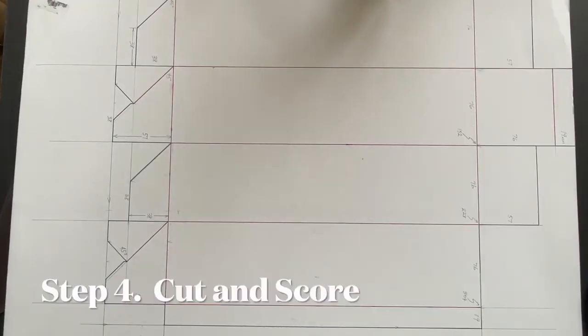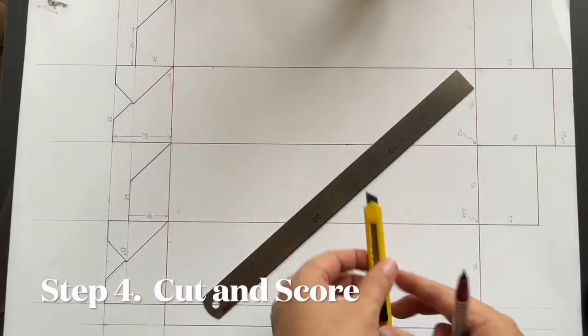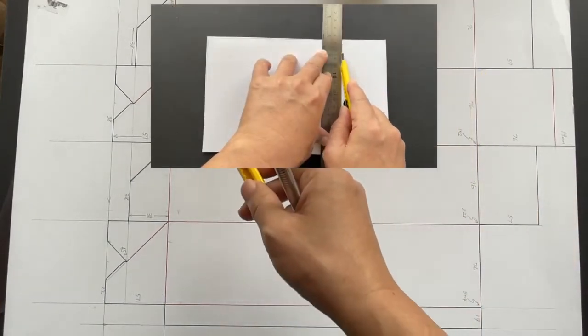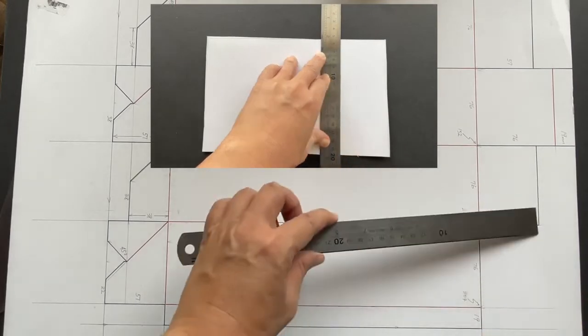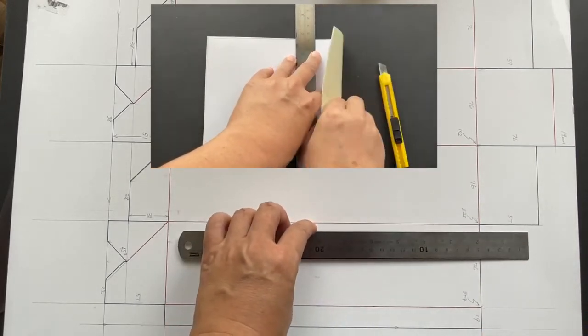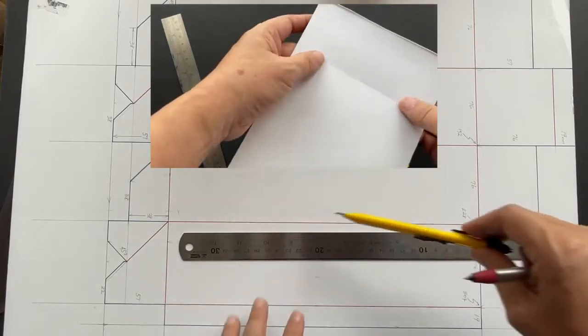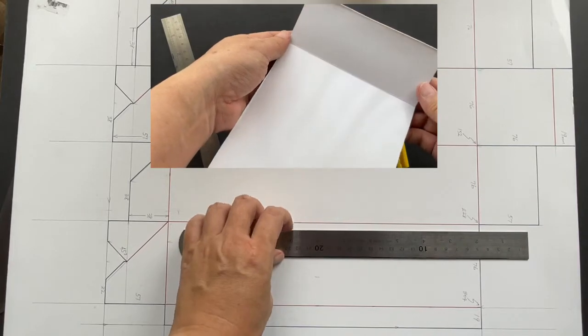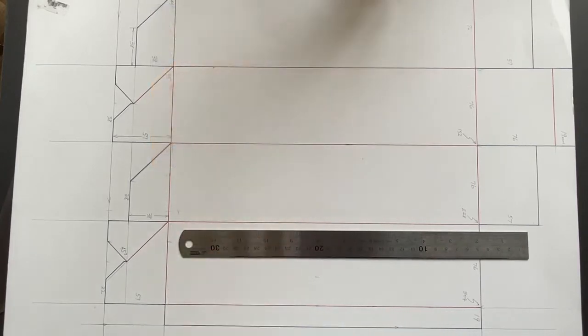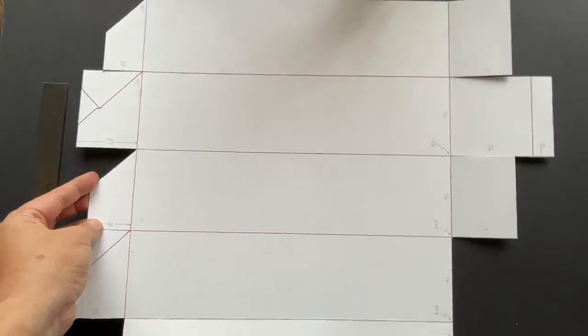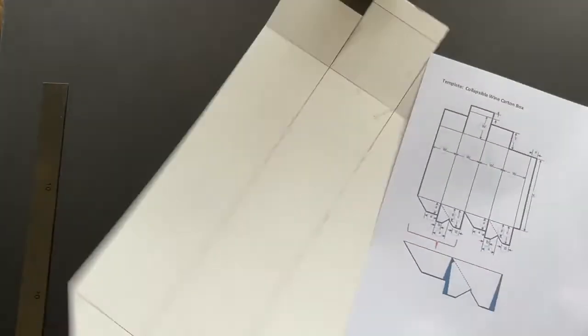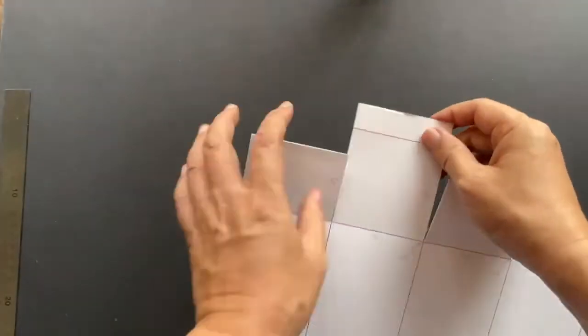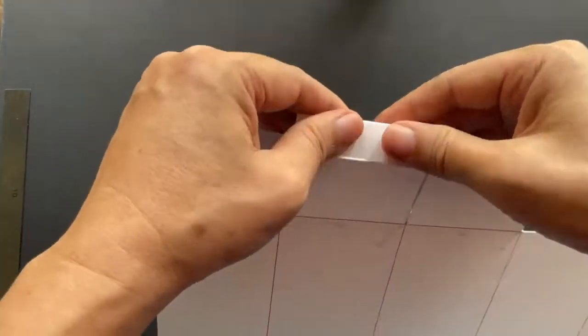Next cut the cardboard using a metal ruler and a sharp blade. Score shallow cuts on the red folding lines. How it's done is illustrated above. This is the almost completely cut and scored cardboard.